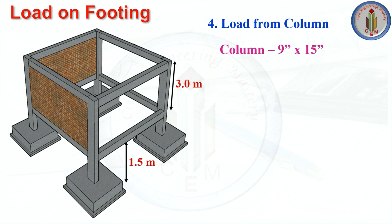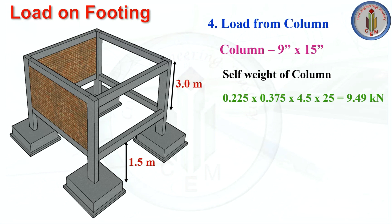Next is the load from the column. Column size is 9 inches by 15 inches. Self-weight = 0.225 × 0.375 × 4.5 × 25 = 9.49 kN. The total column height is 4.5 m — comprising 3 m floor height plus 1.5 m below ground level, both of which must be considered.